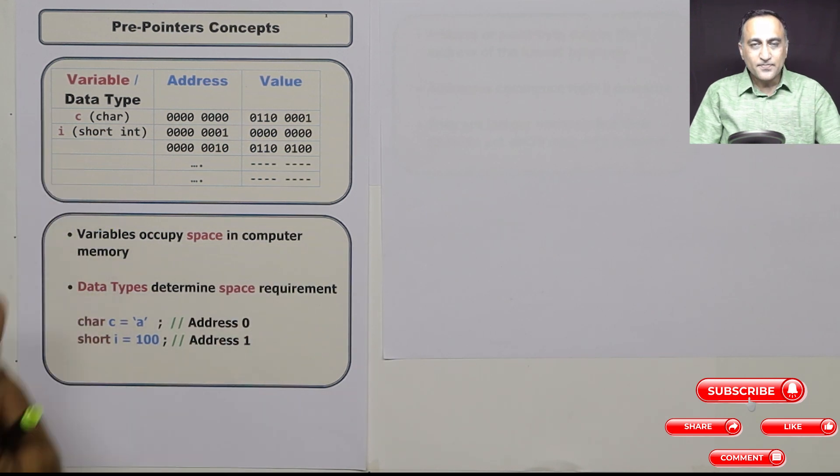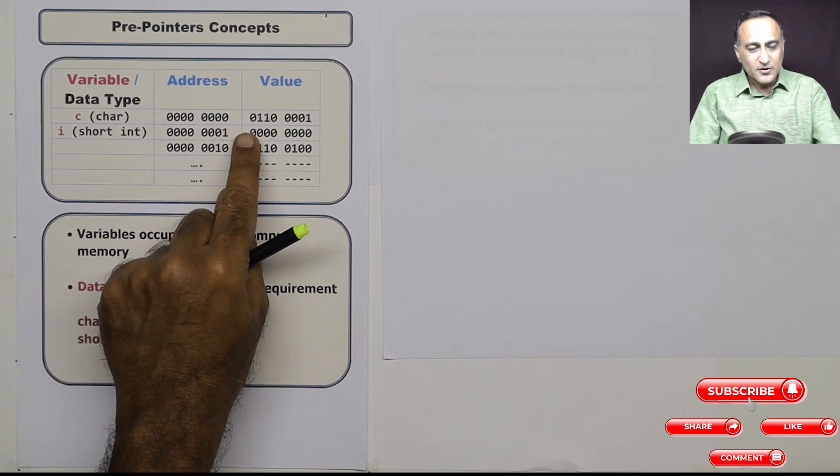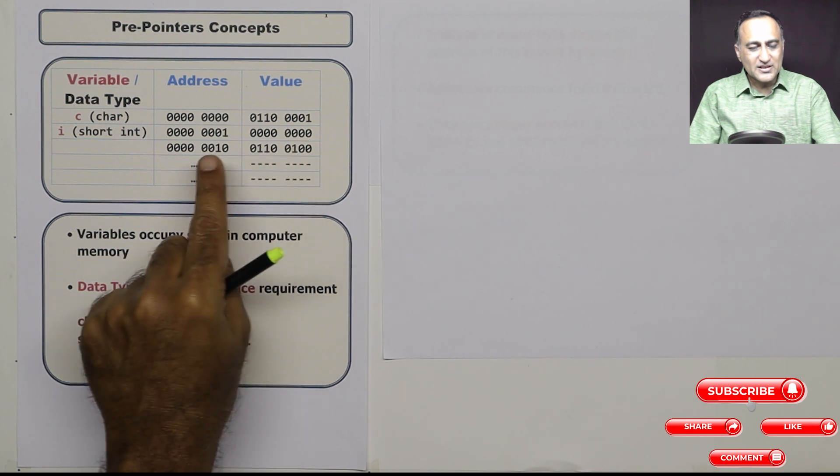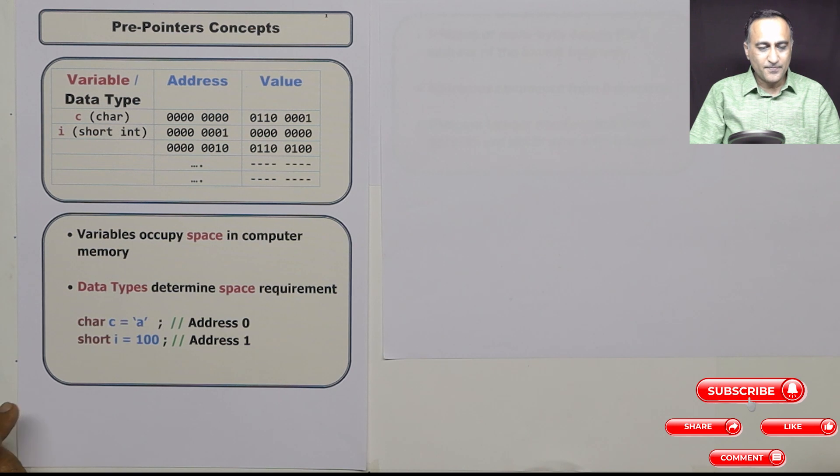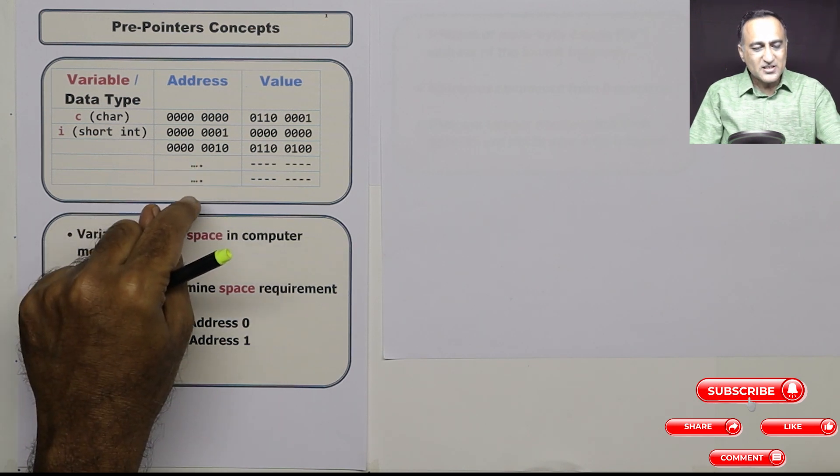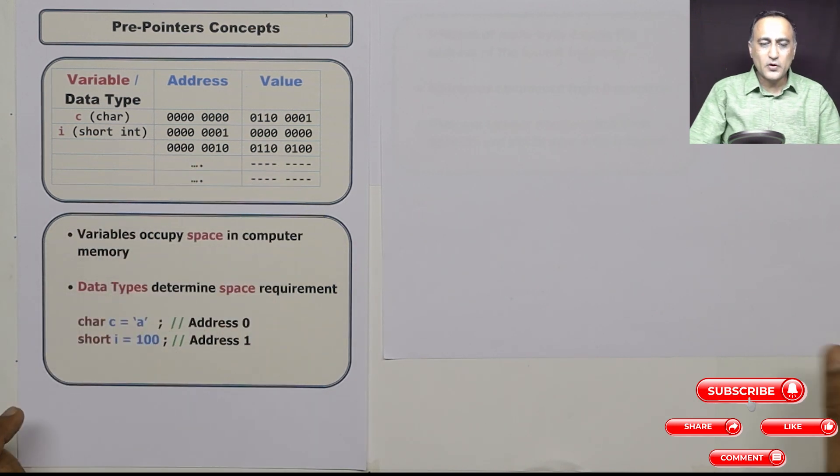i is a short int, it has to be started representing from address one. But since it consists of two bytes, the first byte is going to have all zeros, the next byte is going to have the number 100. And this way your memory addresses keep continuing and it's going to have different values.